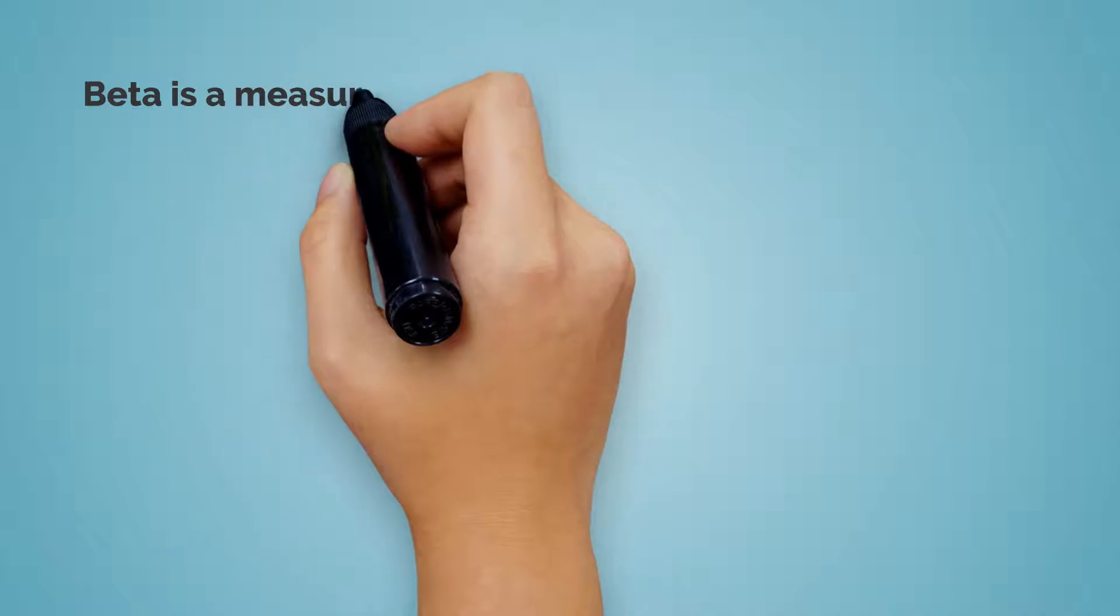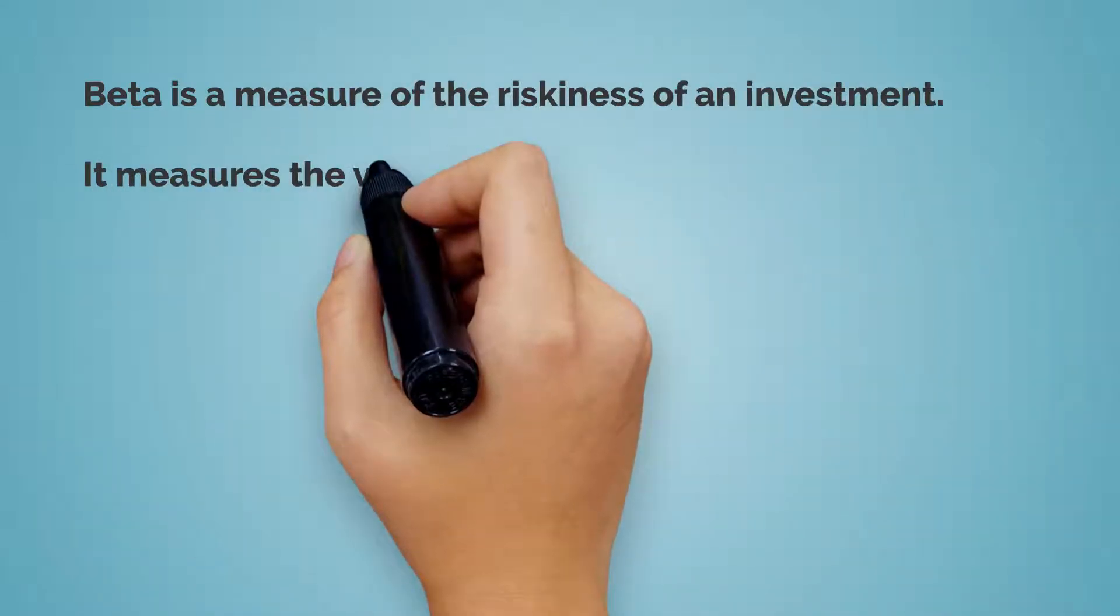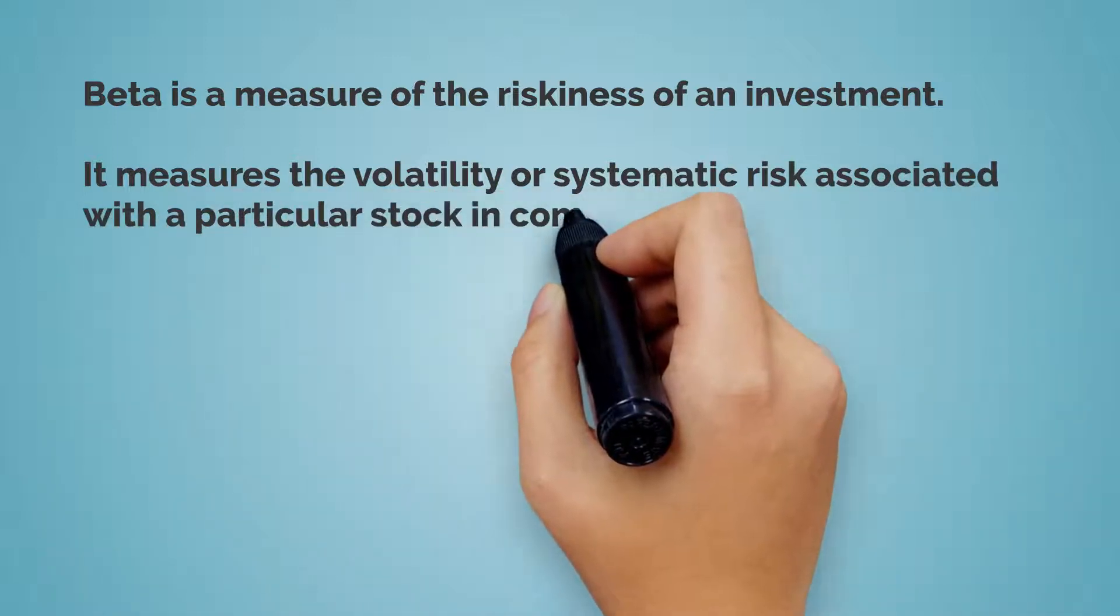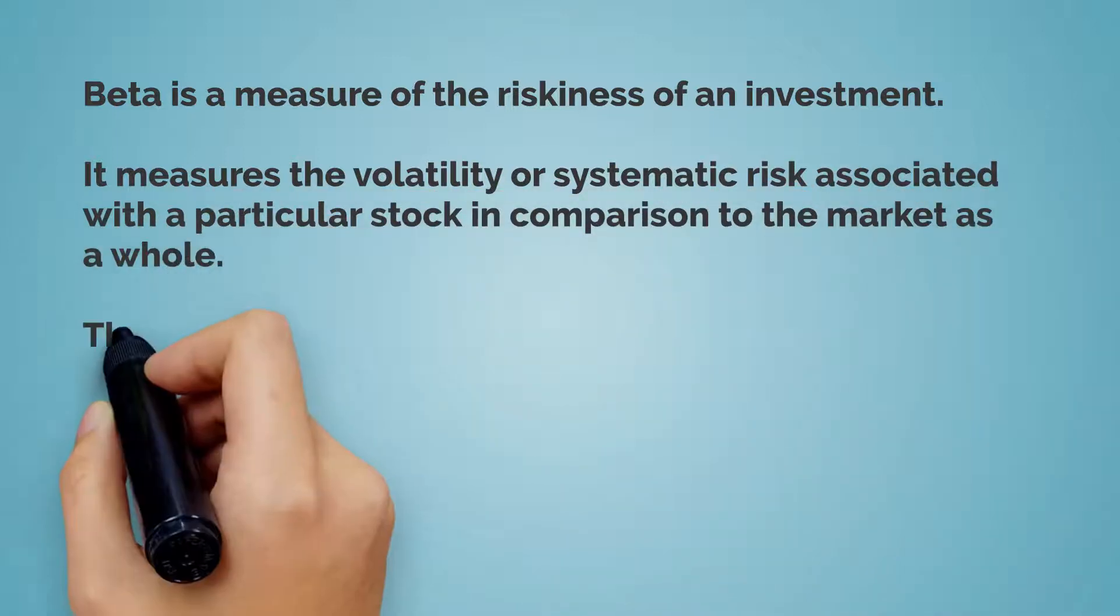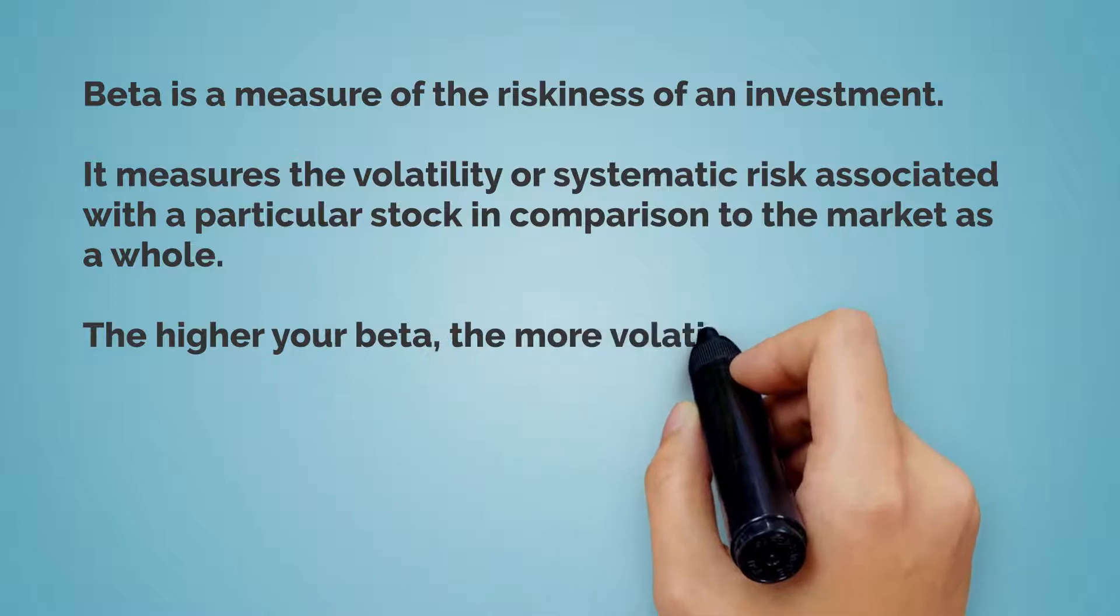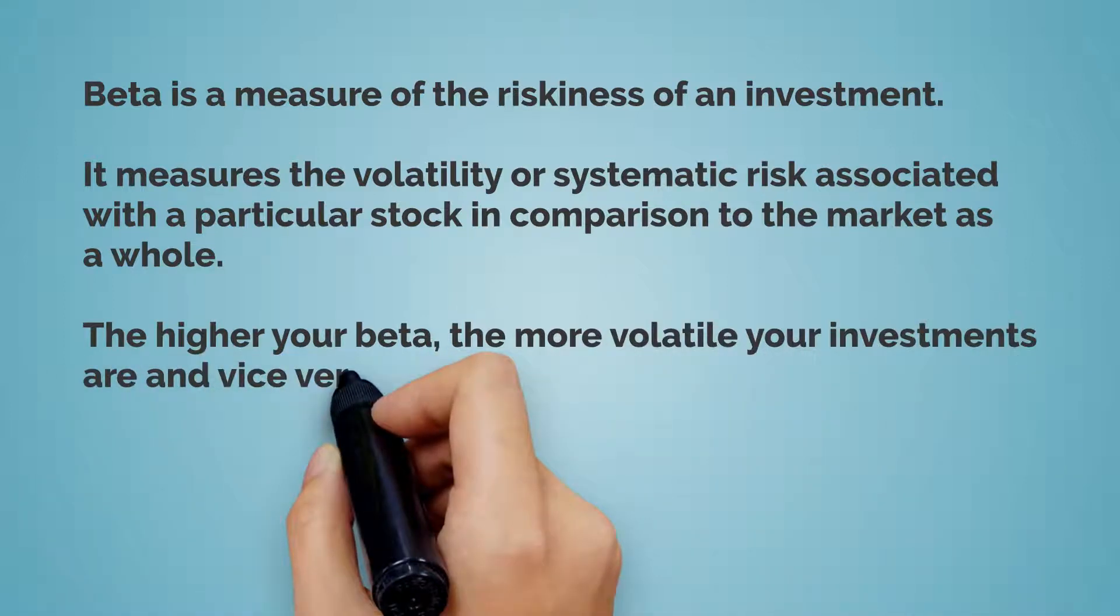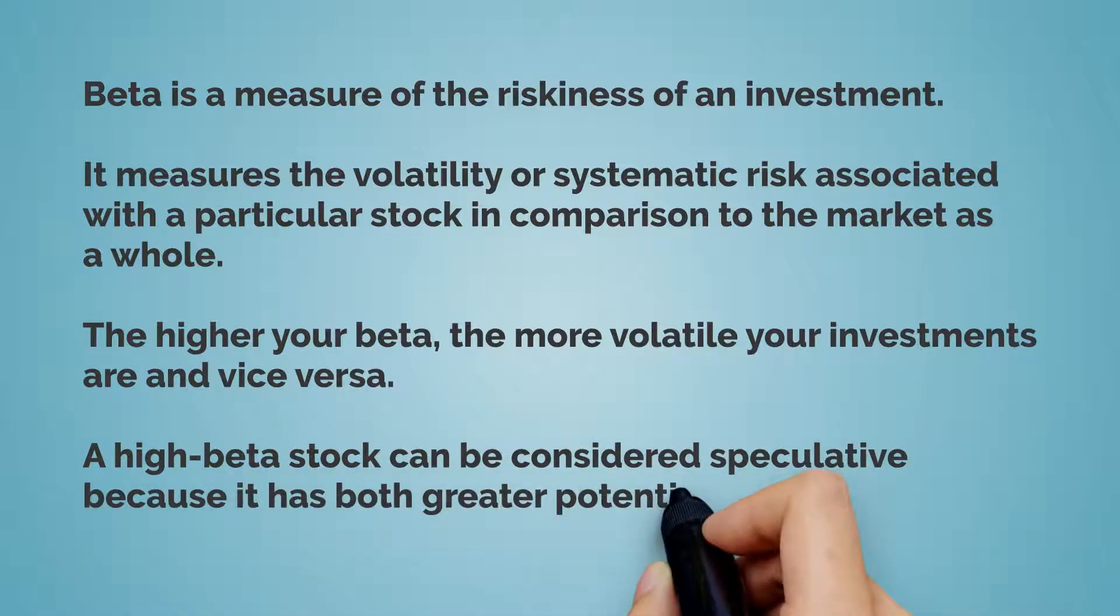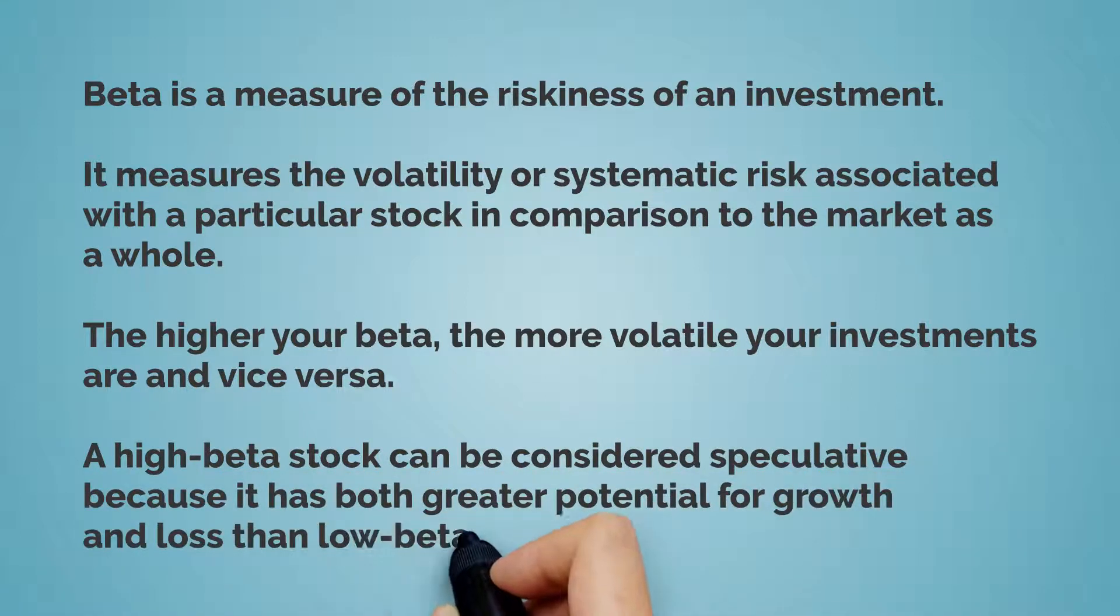Beta is a measurement of the riskiness of an investment. It measures the volatility or systematic risk associated with a particular stock in comparison to the market as a whole. The higher your beta, the more volatile your investments are, and vice versa. A high beta stock can be considered speculative because it has both greater potential for growth and loss than low beta stocks.